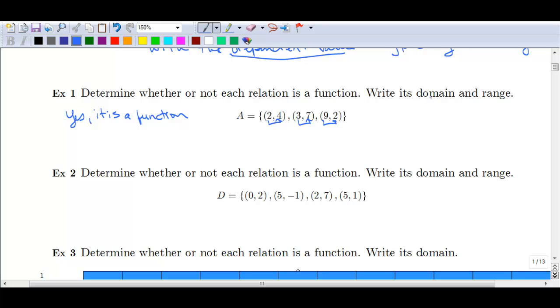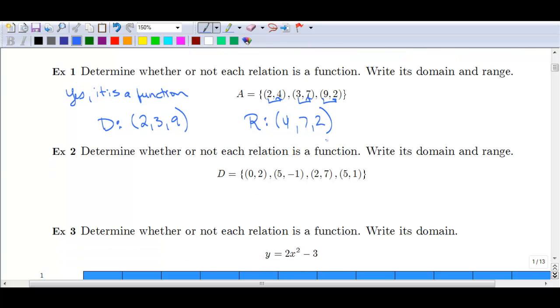If we want to write down the domain, there's a couple of ways we can write this. In this case, we'll just list the values two, three, and nine. We're listing those first values. As far as the range goes, we list the Y values four, seven, and two. When we've got an ordered pair list here, it's pretty easy to find the domain and range.